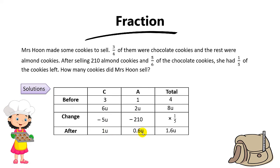Does it make sense? If Mrs. Hoon had 1.6 units of cookies in the end and she has 1 unit of chocolate in the end, then the almond will be 1.6 minus 1, which is 0.6 units.